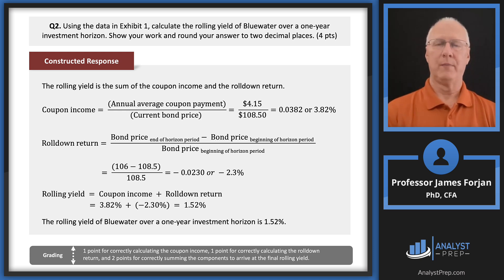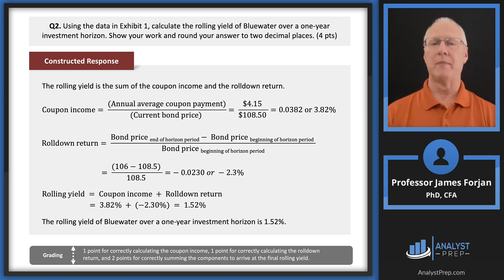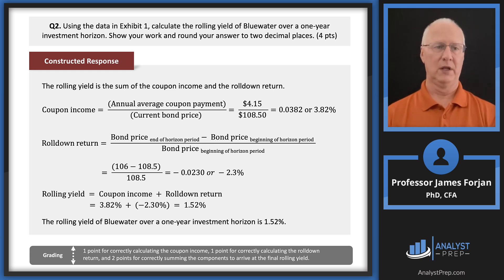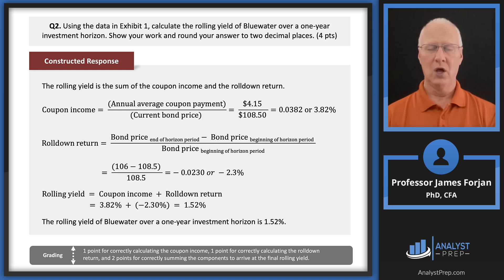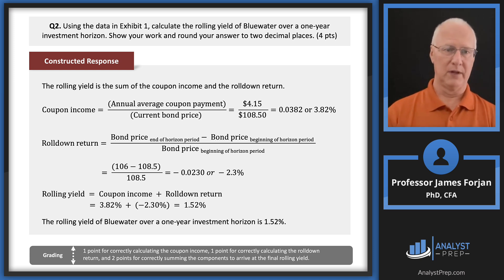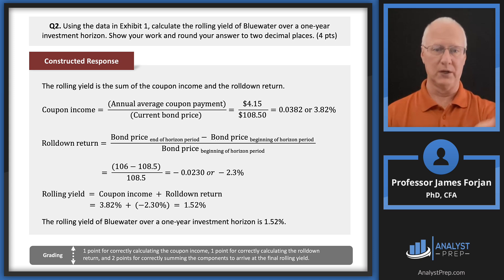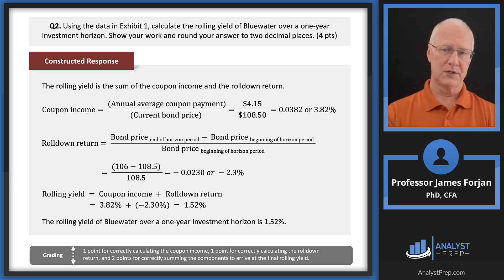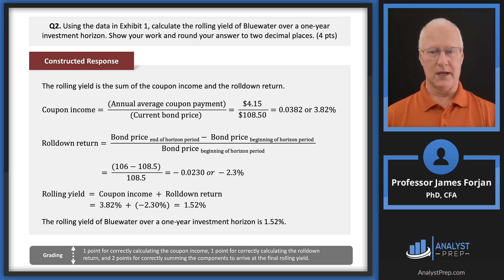What do we get when we buy a bond? Coupon payments and capital appreciation — we call the combination the rolling yield: coupon return plus the roll-down return. Coupon income is like dividend yield — it's the current yield: the annual coupon of $4.15 divided by $108.50 gives 3.82% current yield. The roll-down return is simply did we buy low and sell high? In this case, we bought high and sold low, giving minus 2.3%. Summing those: minus 2.3% plus 3.82% equals 1.52% rolling yield.